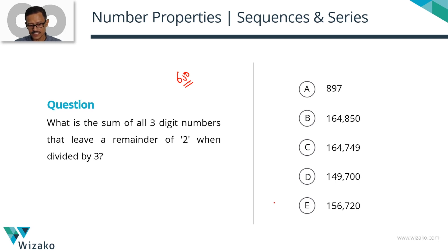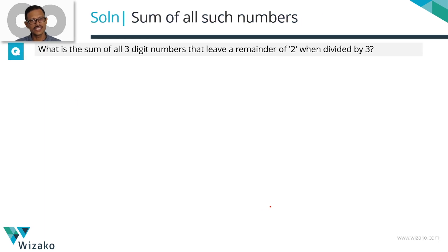What is the sum of all three-digit numbers that leave a remainder of 2 when divided by 3? These are three-digit numbers that leave a remainder of 2 when divided by 3. Let's check out what this sequence is.